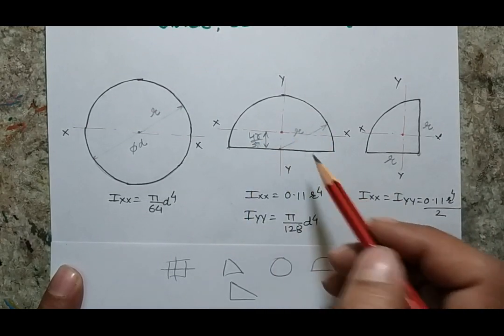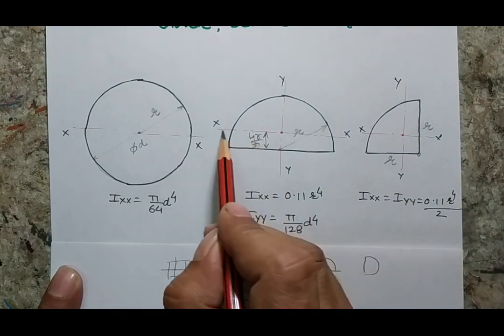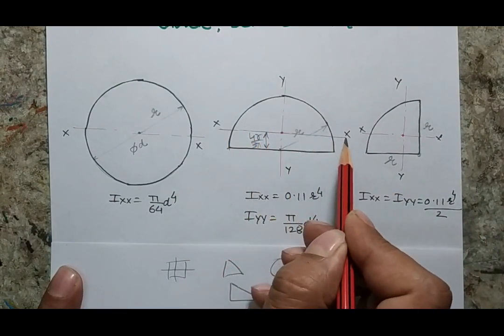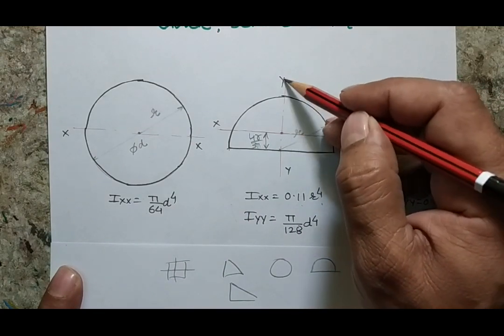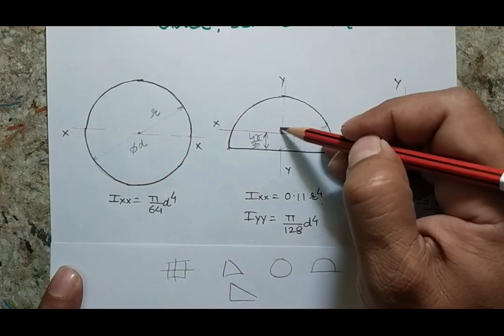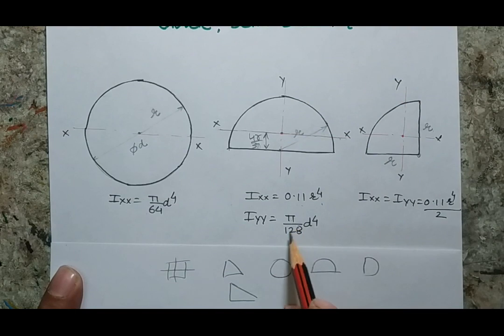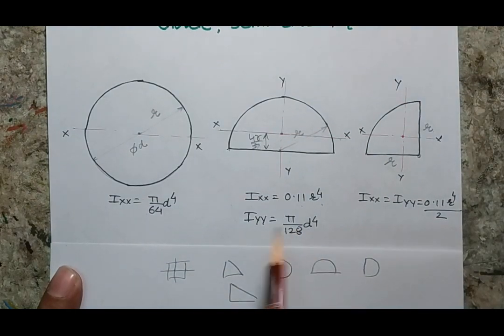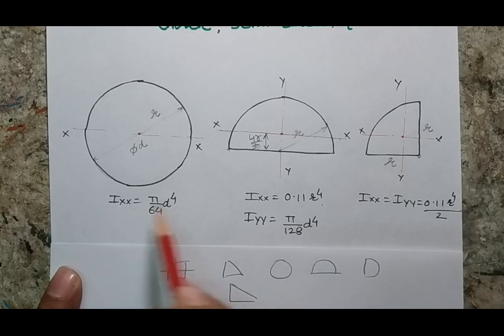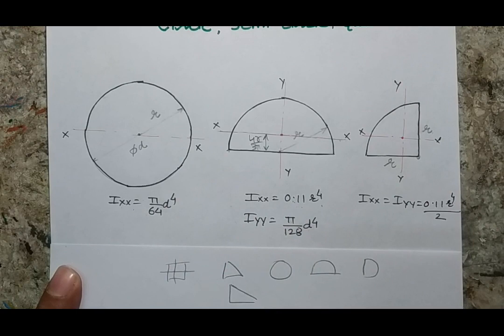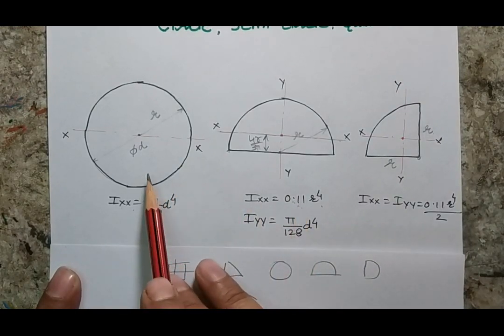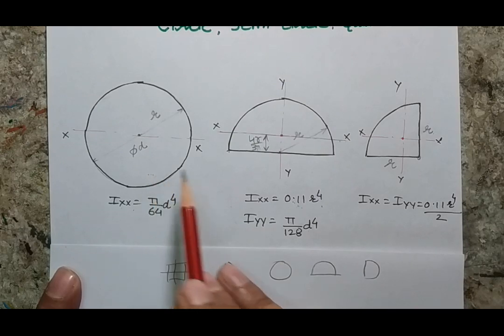In the case of a semicircle, the value of moment of area about the centroidal axis is 0.11r⁴. The second centroidal axis, which is the vertical centroidal axis, has a value of (π/128)d⁴. This vertical value is half of the circle's value, but the horizontal centroidal value is not simply half — and that's what I want to convey through this session: how we derive this value using the moment of area of a circle.